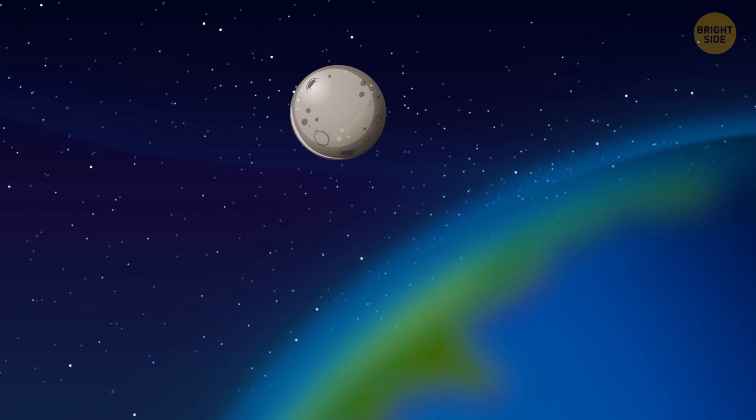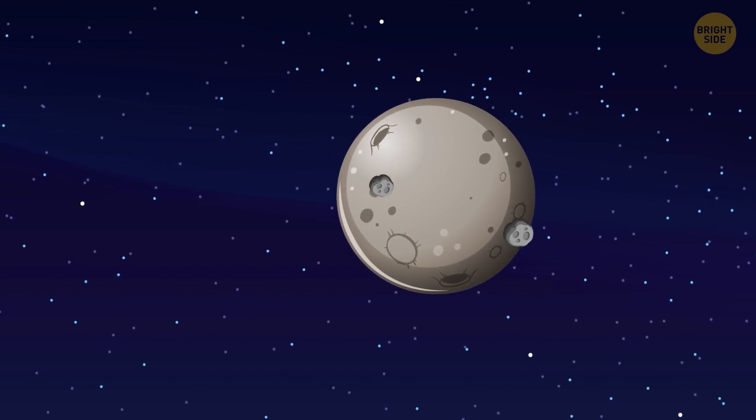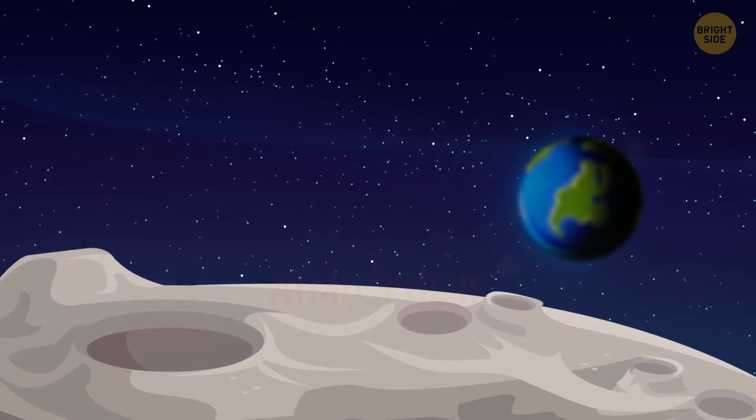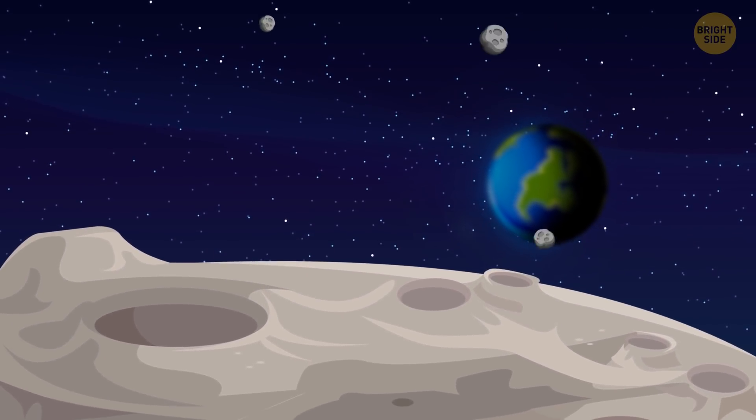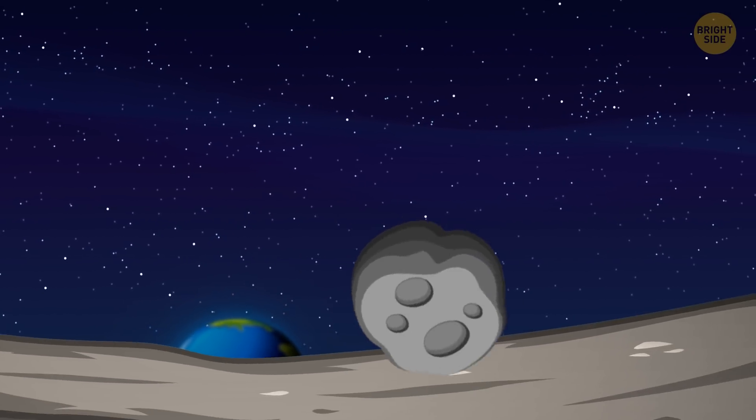There can also be starbursts on the Moon. We can blame this on meteorites that fall on the surface. Because the Moon has no atmosphere, asteroids that approach it don't burn up. Having a lot of weight and speed, they cause an explosion on impact.